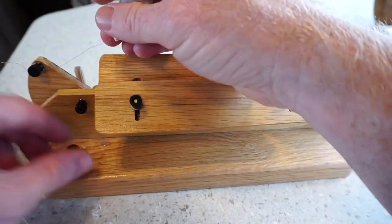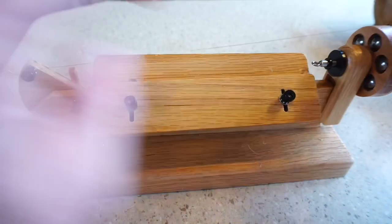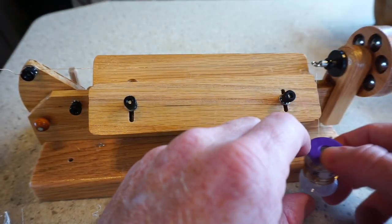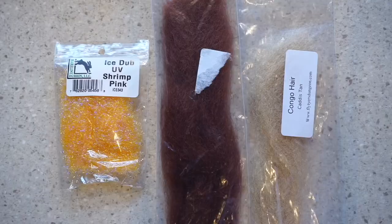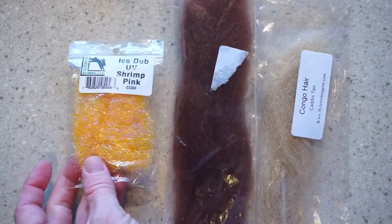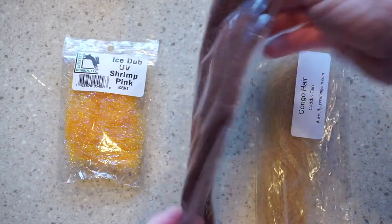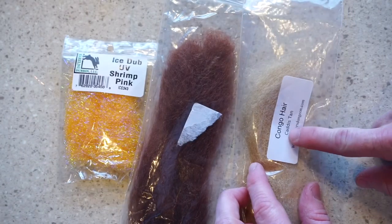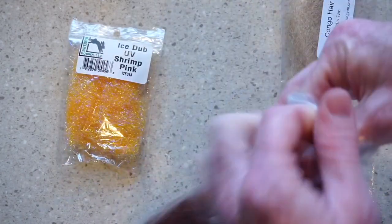Before you do anything you probably want to make a few brushes if you're not going to buy the EP brushes. If you make your own, I like using this ice dove in shrimp pink and then I'm using an EP fiber substitute called Congo hair, but use EP if you want.